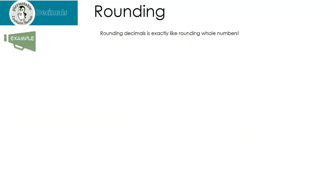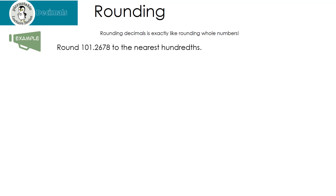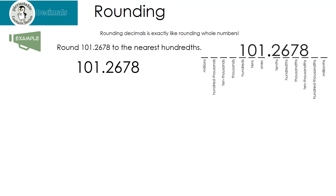Let's look at another example. We want to round this number to the nearest hundredths. If you're still a little shaky about which number is in the hundredths place, be sure to use the place values. But remember, you need to have them memorized. The question asks us to round to the nearest hundredths place. Where exactly is the hundredths place? That's the six. I'm going to underline my six.